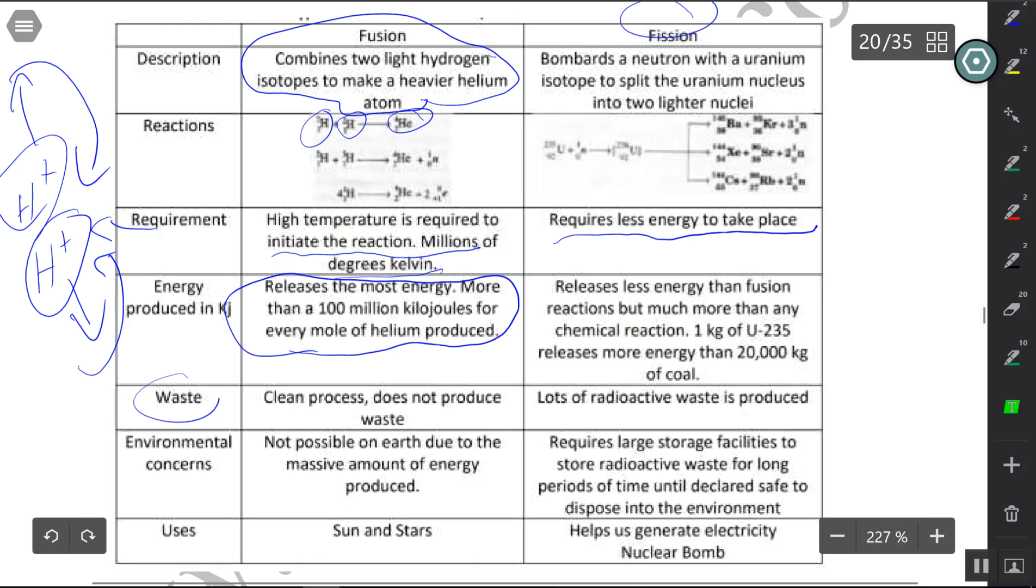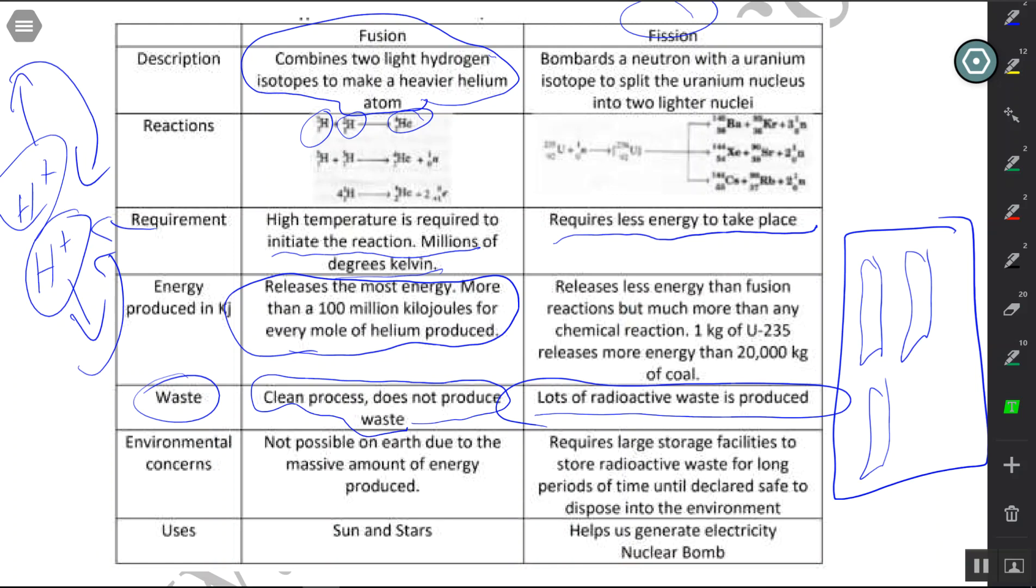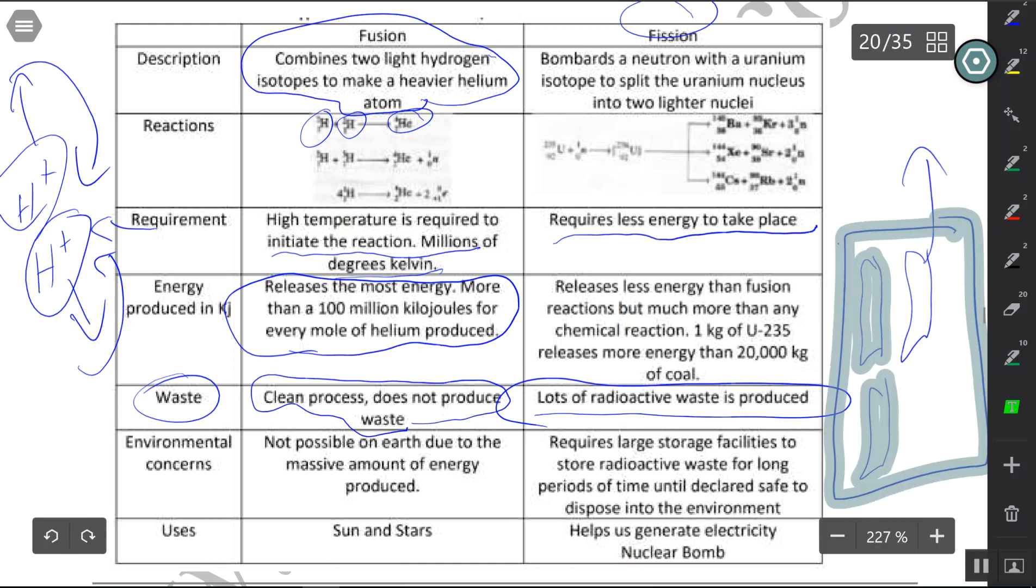When it comes to waste, fusion is considered a clean process. You're not going to get any radioactive waste from fusion. While fission, you get a lot of radioactive waste. And we have a problem with fission because all these radioactive rods that are used in nuclear power plants have to be stored in facilities for a long period of time until they are completely safe to be released into the environment. So storage is an issue when it comes to doing fission reactions.